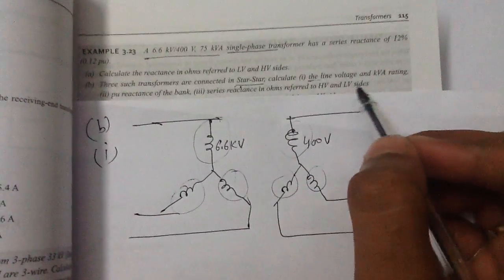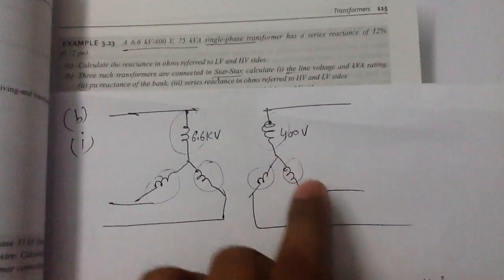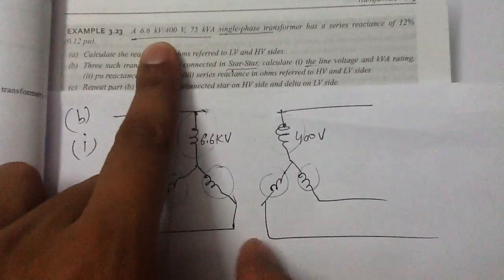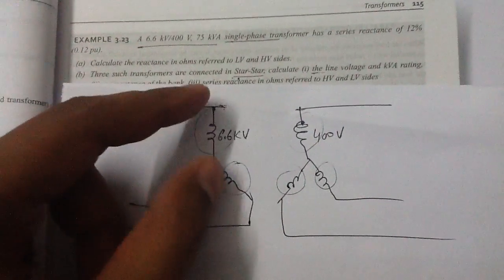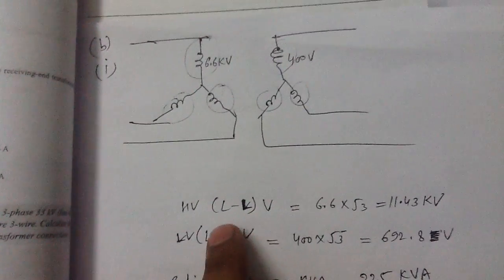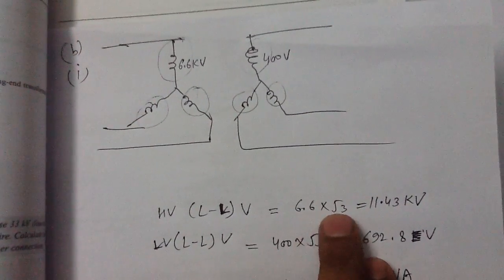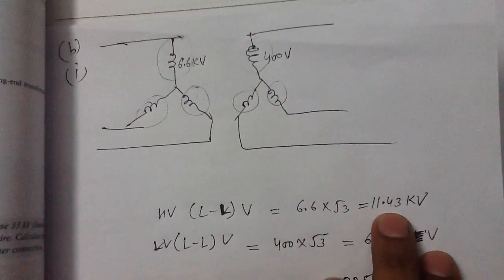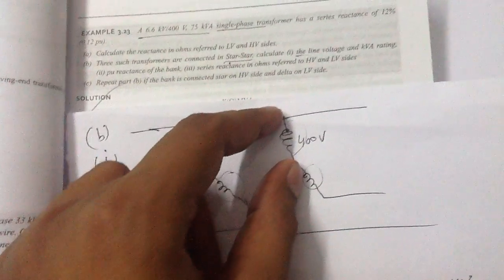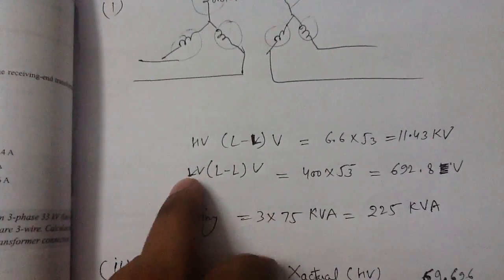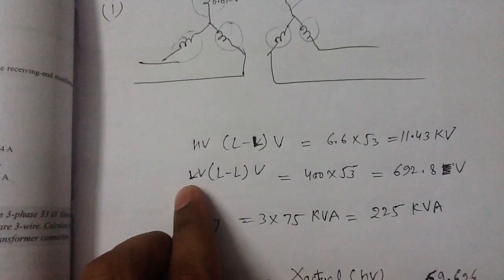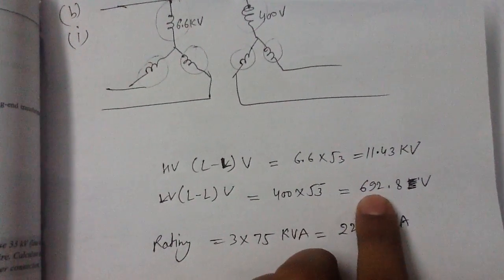Part B asks for the line voltage and the kVA rating of the whole unit. The phase voltage on the HV side is 6.6 kilovolt, so the line-to-line voltage on the HV side will be 6.6 × √3 = 11.43 kilovolt. The phase voltage on the LV side is 400 volt, so the line-to-line voltage on the LV side will be 400 × √3 = 692.8 volt.